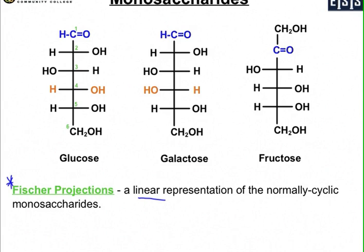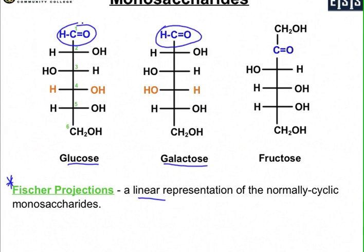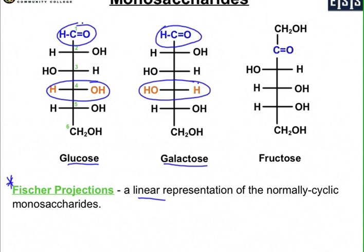Between glucose and galactose, you'll notice that the beginning of the chain highlighted in blue is the same — carbon one is an aldehyde group. What is different is down on the fourth carbon, where the H and the OH have switched places. So these two compounds are otherwise the same; the only difference is on the number four carbon. That's how you can identify whether you have glucose or galactose.